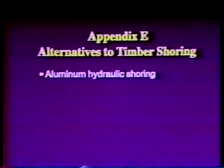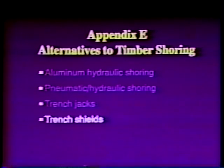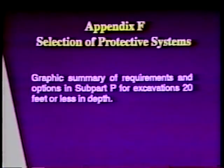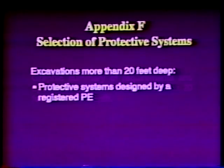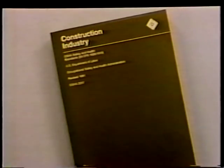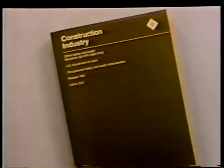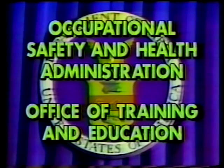Appendix E illustrates alternatives to timber shoring such as aluminum hydraulic shoring, pneumatic hydraulic shoring, trench jacks, and trench shields. Appendix F presents a graphic summary of the requirements and options in Subpart P for excavations 20 feet or less in depth. Deeper excavations require protective systems designed by a registered professional engineer or manufactured systems capable of the needed depth and used in accordance with manufacturer's specifications. Strict adherence to these regulations can substantially reduce the number and severity of accidents resulting from excavation work. If you would like more information about OSHA or about how to comply with OSHA excavation regulations, contact your nearest OSHA area office.